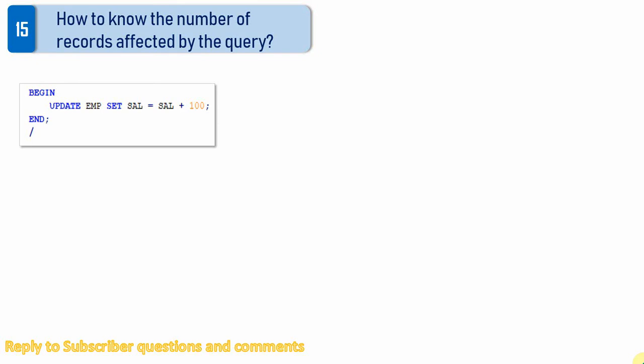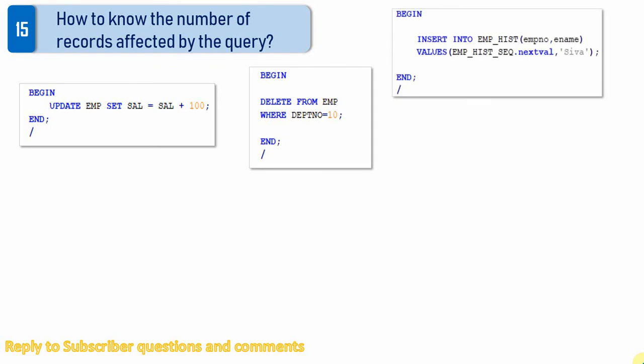The first anonymous block uses a simple update statement, and we will see how to find the number of records affected by it. I have also taken a few more examples: one for a delete statement and another for an insert statement. This insert is based on a simple value-based insert. Another block is a query-based insert, where we use a subquery and insert the entire result into another table, and we will see how to find the number of records inserted.